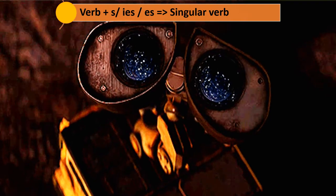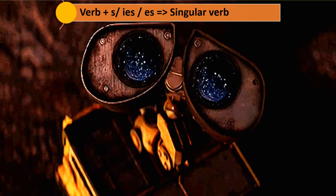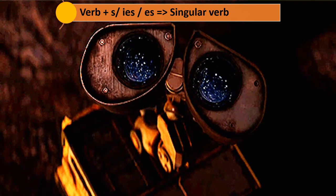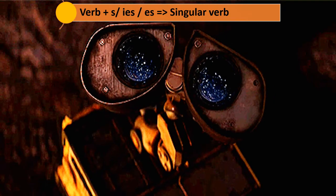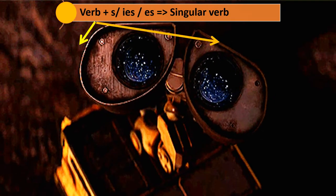If you have any confusion, you can go and see that chapter. Now, verbs are of two types: they are auxiliary verbs and main verbs.